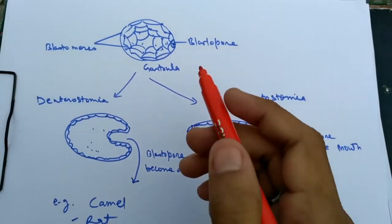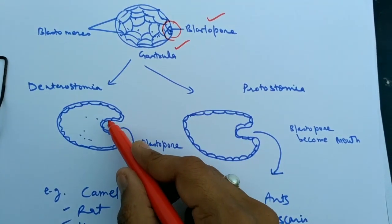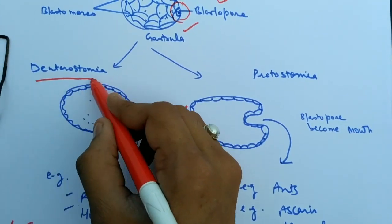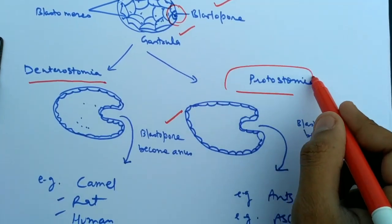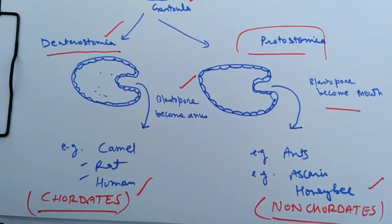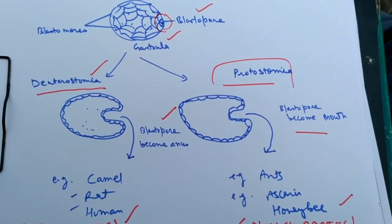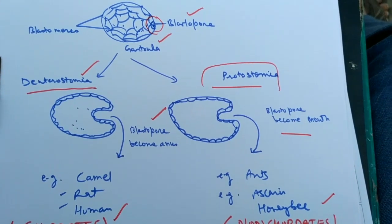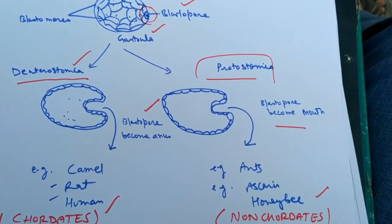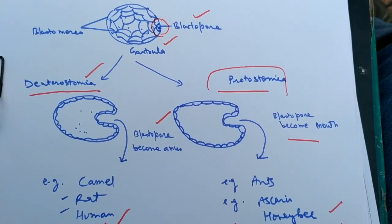A very basic contrasting embryological feature: in early gastrulation, a lip-like structure called the blastopore is formed. If the blastopore changes into the anus, the organism is a deuterostome; if it changes into the mouth, it is a protostome. Deuterostomes are chordates and protostomes are non-chordates. I hope this discussion is helpful in understanding the contrasting features between chordates and non-chordates. Please comment, subscribe, and share with science-loving students. Thank you and have a wonderful day.